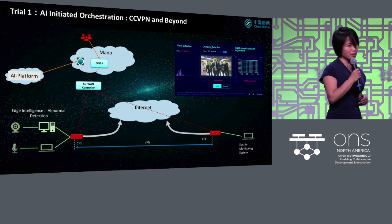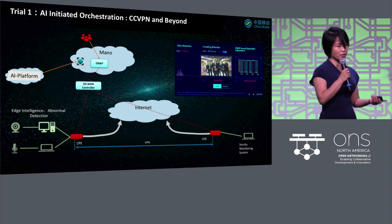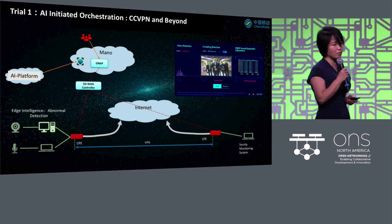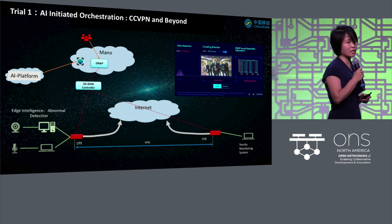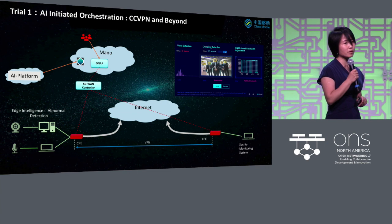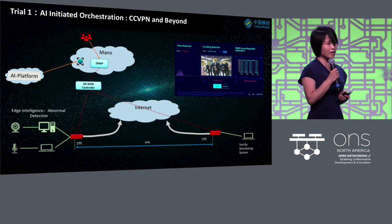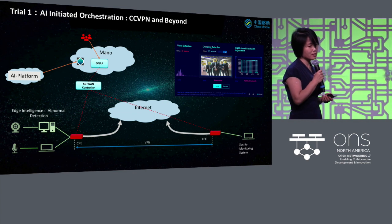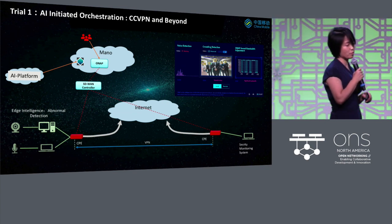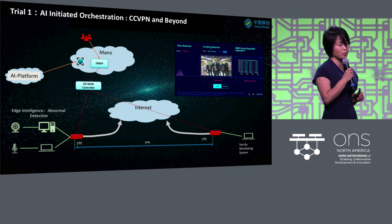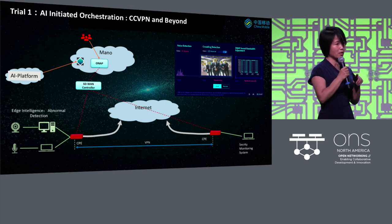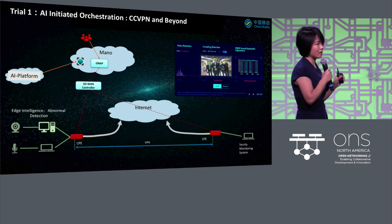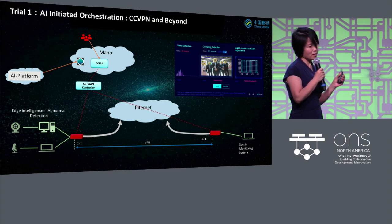For future next-generation network use cases not yet at large scale — we presented last year with Huawei and Vodafone on cross-layer, cross-carrier VPN. This year we showed a demo also partially deployed in China Mobile: combining ONAP and AI on the edge, for a security monitoring scenario where abnormal sound or video signals trigger ONAP to automatically adjust bandwidth.